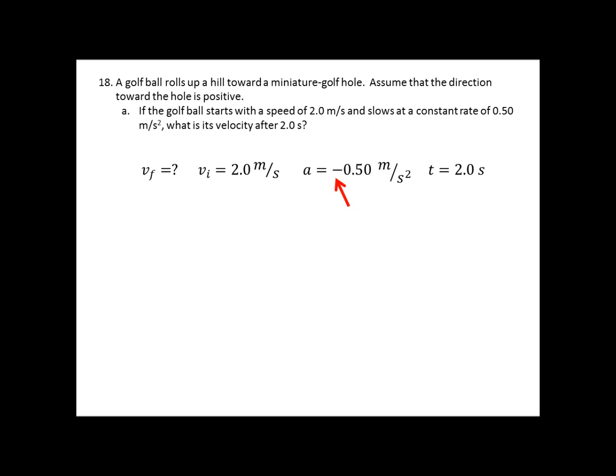I always like to label each number with its appropriate variable for when we use it in an equation. Whatever we're looking for, whatever our unknown is, I like to label with a question mark. So we're looking for V final. We know that V initial is 2. The acceleration we make a negative because it's slowing down. The acceleration is pointing in the opposite direction of the hole and our time is 2 seconds. So our equation is going to be V final equals V initial plus AT. When we plug in our 2 meters per second plus negative 0.50 times 2 seconds, we find out that our final velocity is 1 meter per second.